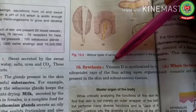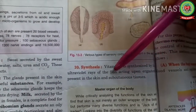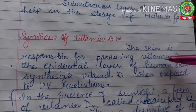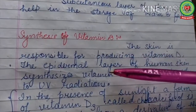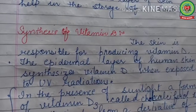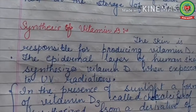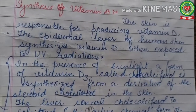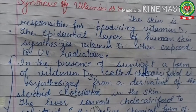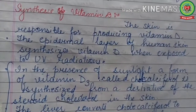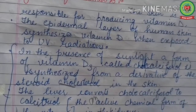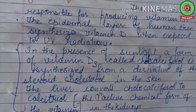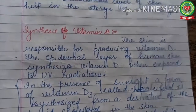The next function is synthesis. Vitamin D is synthesized by ultraviolet rays of the sun acting upon a sterol present in the skin and subcutaneous tissue. The epidermal layer synthesizes vitamin D when exposed to ultraviolet radiation in sunlight. A form of vitamin D3 called cholecalciferol is synthesized from a derivative of steroid cholesterol. The liver then converts cholecalciferol to calcitriol, the active chemical form of vitamin D.